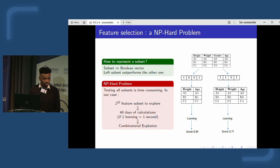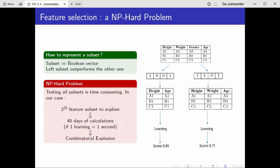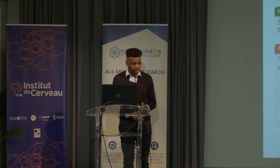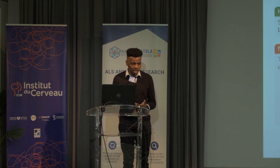Here is an example of how feature selection works. We have a dataset with four features — height, weight, gender, and age. From these we can form different subsets: for example, one subset with height and age, and another with three features. We run both models, evaluate them, and the subset achieving better predictive quality is preferred. The goal is to test and evaluate all possible subsets to find the best one.